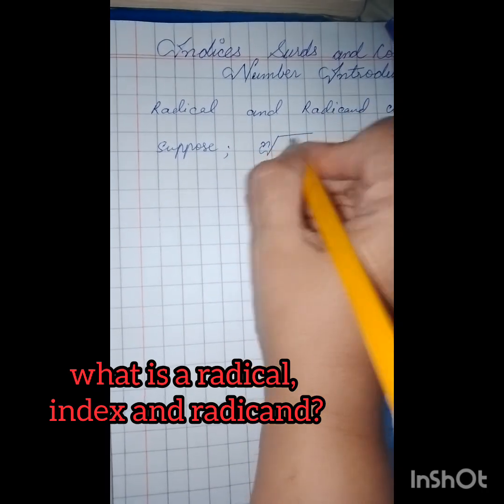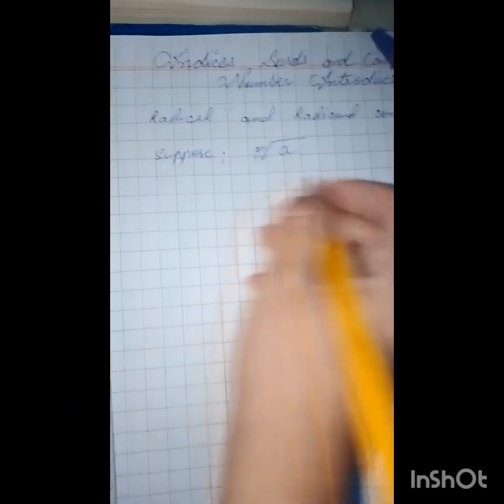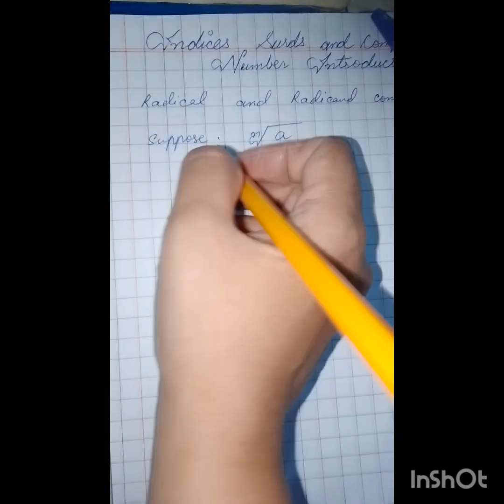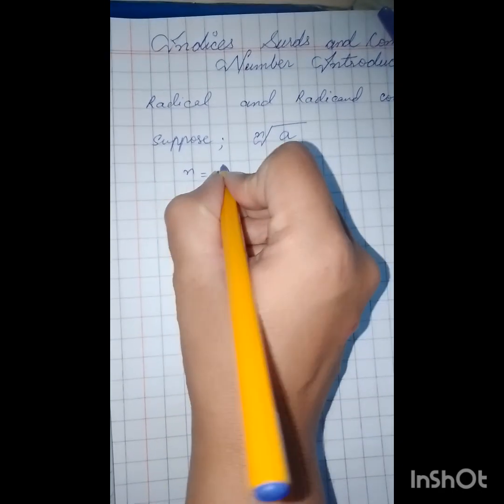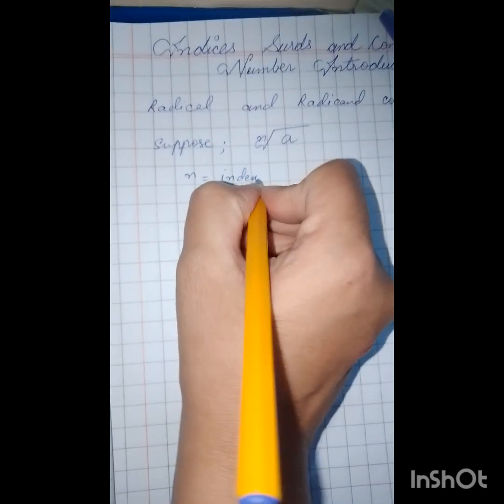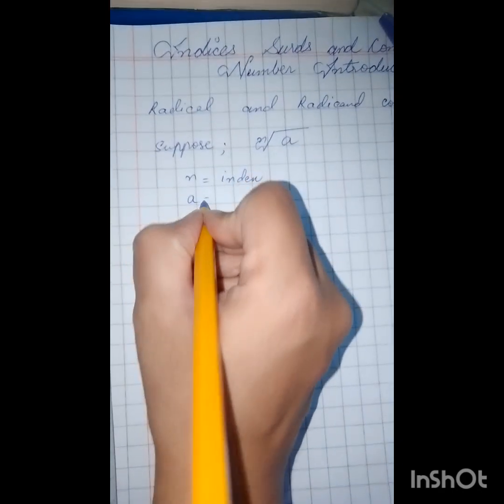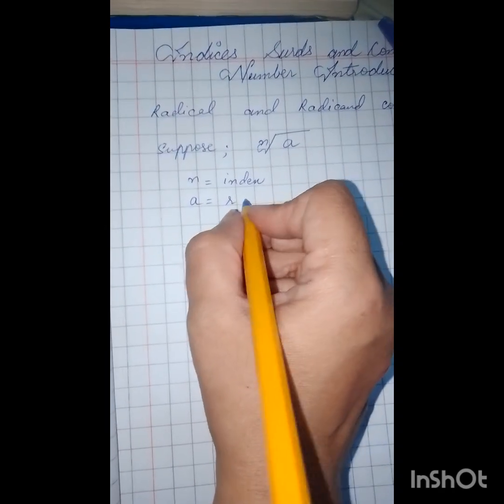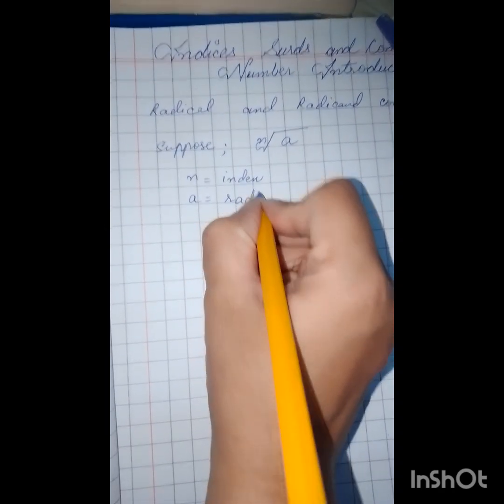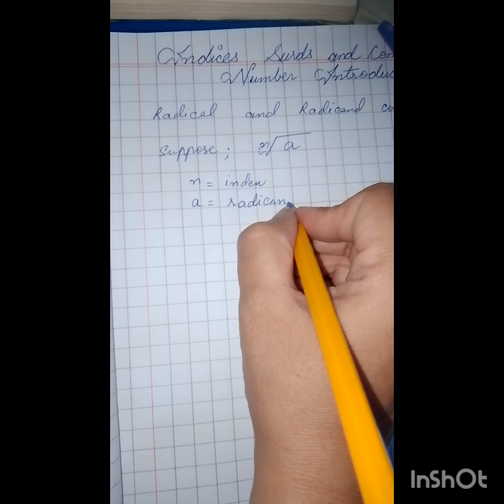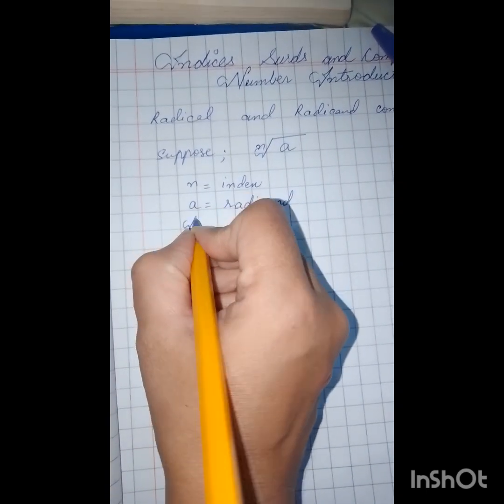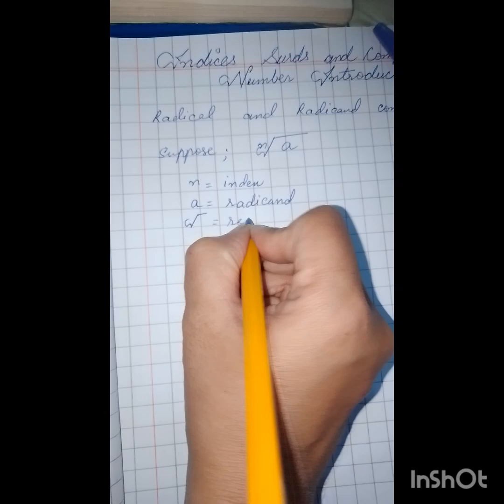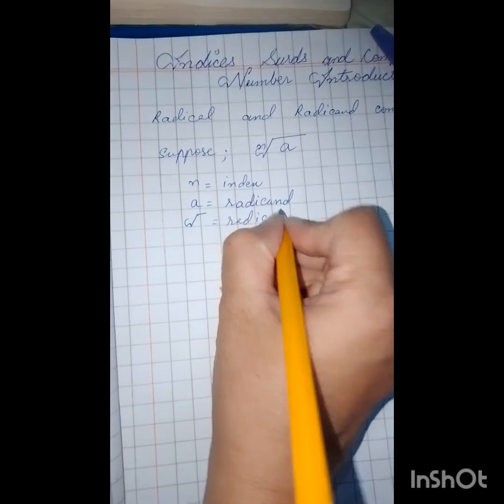In symbolic form we can write it as x equals n root a. So it will be x equals a to the power 1 upon n. Where n is the index, a is the radicand, and 1 over n is the radical.